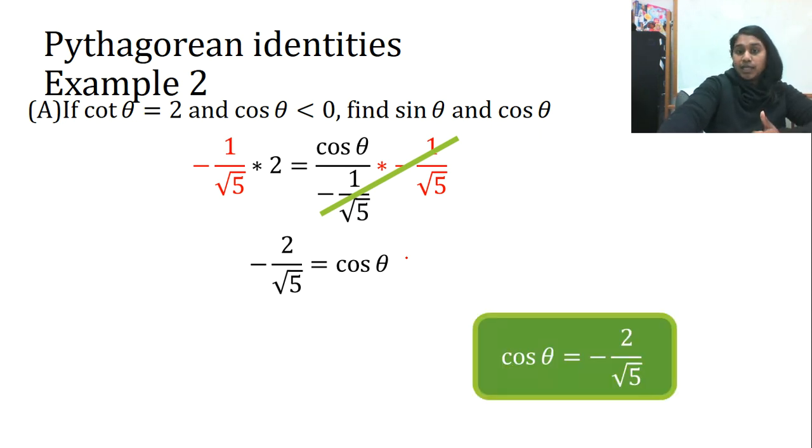And ta-da! I end up with my answer. I can verify that I know that cosine should be negative. Oh, look at that. Cosine should be negative. So, boom. I got my two answers. Now, go ahead and try.